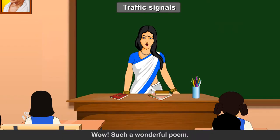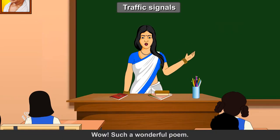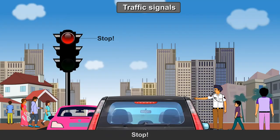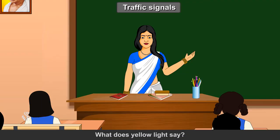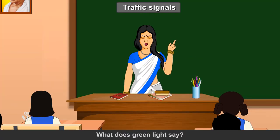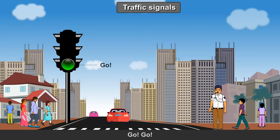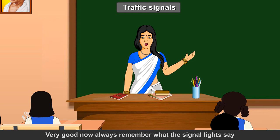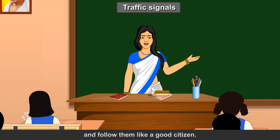Wow, such a wonderful poem! So children, now tell me: what does red light say? Stop. What does yellow light say? Wait. What does green light say? Go. Very good! Now always remember what the signal lights say and follow them like a good citizen.